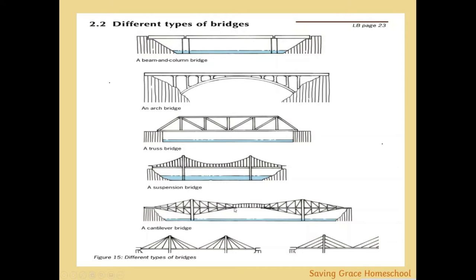The cantilever bridge works on a different principle, using a balance of forces on a column support to keep the structure strong. It is to some degree a truss bridge on a series of columns — also a very strong design that can be viable for many situations depending on weight and load.